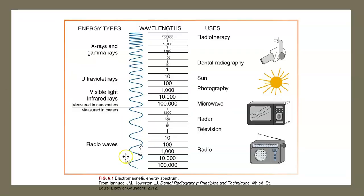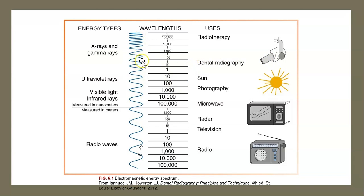Here's an example of an electromagnetic energy spectrum. There is a range — sometimes very high frequency, sometimes low frequency, with variations in between. Radiography sits at the high-frequency end of the spectrum, requiring a lot more energy.